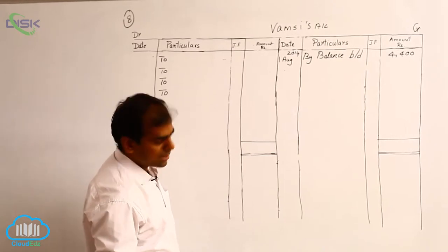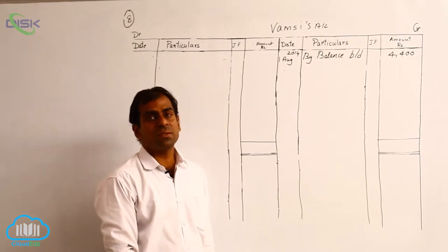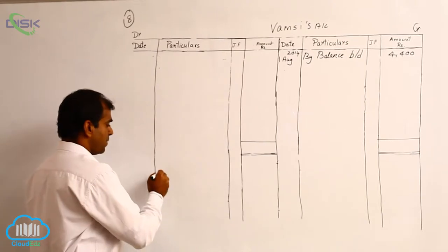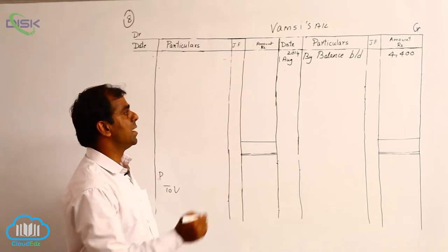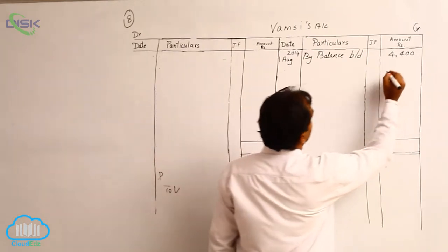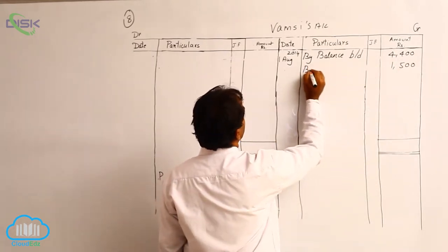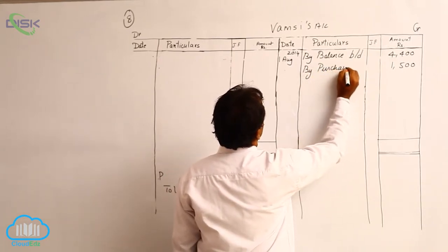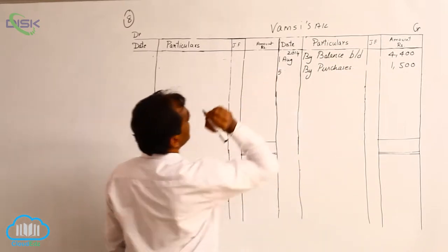The second transaction is on 5th August — purchased goods from Vamsi. If we journalize, it becomes purchases account debit to Vamsi. So we have to credit Vamsi's account with 1,500. We enter 1,500 on the credit side. The reason being purchases, since we are buying goods. The transaction is on 5th August.